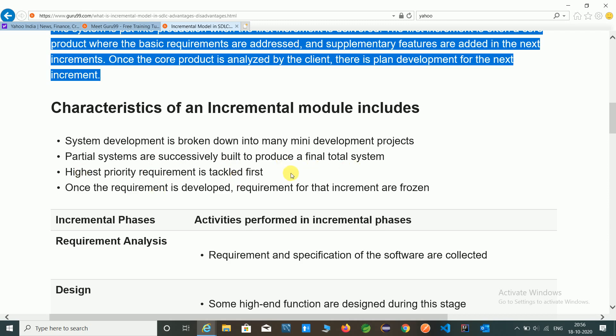Highly priority requirement is tackled first, which is an essential requirement of a model, that model we can design first. Once the requirement is developed, so requirement for the increment are frozen. Once all the models are developed, we can deploy to production.